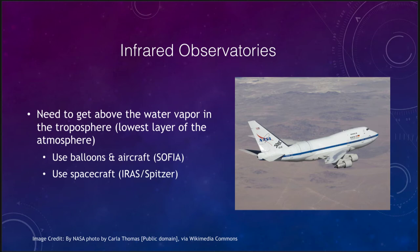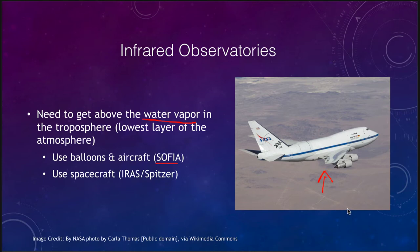Let's look first at some infrared observatories. Infrared is one of the easier ones because all we have to do is get above the water vapor in the lowest layer of the atmosphere — the troposphere. Once we are up above the water vapor, most of the infrared does make it down to the earth. It is water vapor and other gases that absorb the infrared radiation. So we've used things like balloons and the SOFIA aircraft, which can fly at very high altitudes and have an infrared telescope looking out at the sky. In fact, there are also some infrared telescopes on high mountain tops that can be used.